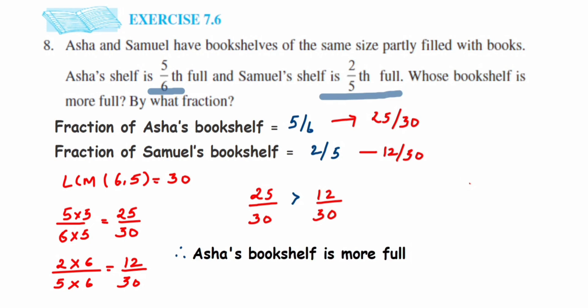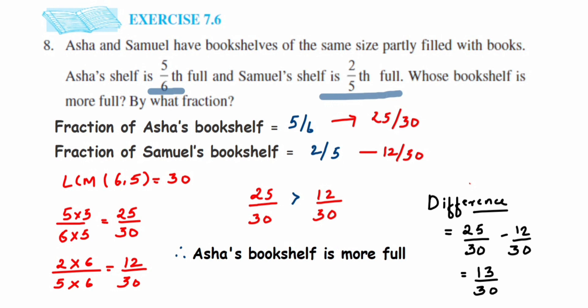They're asking by what fraction, which means we have to subtract to find the difference. It's easy because we already took the LCM and made like fractions. The difference equals 25 upon 30 minus 12 upon 30. Since the denominators are the same, we subtract the numerators: 25 minus 12 equals 13, giving us 13 upon 30.